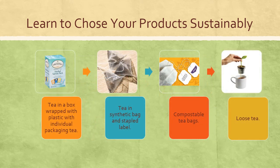Our last example is tea. You can buy tea that comes in a box wrapped in plastic, with each tea bag packaged individually. It is also important to consider that many teas use synthetic bags that cannot be composted, and have the label stapled on. It is better to choose tea bags that can be composted, or even better, to buy loose tea.